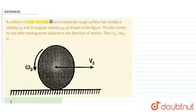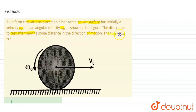The question is: a uniform circular disc placed on a horizontal rough surface — so friction is applicable — has initially a velocity v₀ and an angular velocity ω₀ as shown in the figure. The disc comes to rest after moving some distance in the direction of motion. We need to find v₀ divided by r·ω₀.